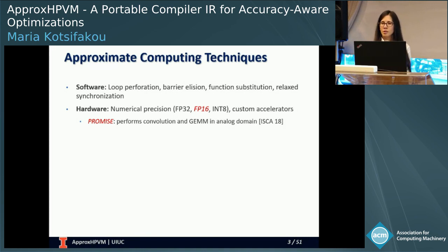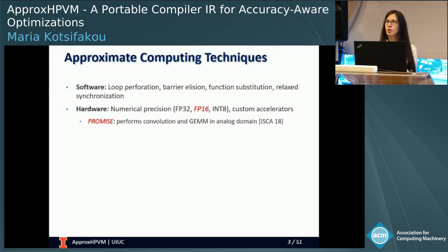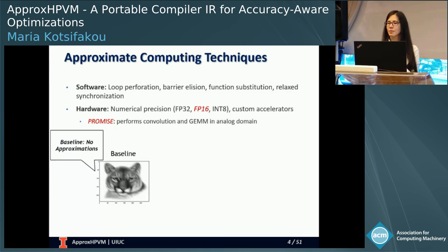In particular, we target the PROMIS accelerator, which is a machine learning accelerator that can achieve energy benefits by performing convolution and multiplication operations in the analog domain.